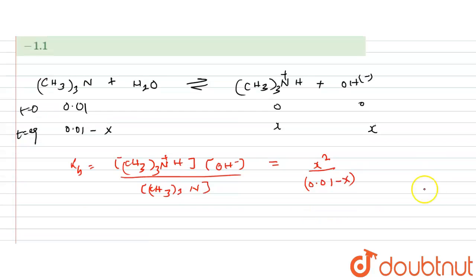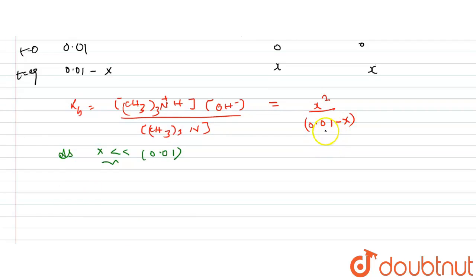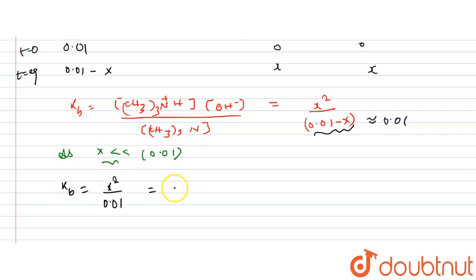Since x is expected to be very very small — by Ostwald's dilution law — we can approximate 0.01 − x ≈ 0.01. So Kb simplifies to x² / 0.01.